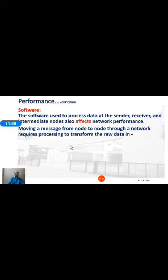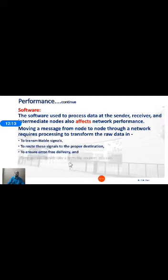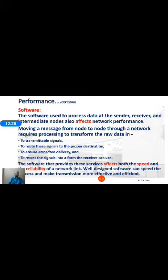Performance also depends on software — hardware alone is not sufficient. The software used to process data at the sender, receiver, and intermediate nodes affects network performance. Moving messages from node to node requires processing to transform raw data into transmittable signals, ensure error-free delivery, and recast signals into usable form at the destination. Well-designed software can speed up the process and make transmission more efficient, thus increasing performance.